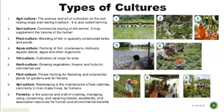Types of culture: Agriculture, Sericulture, Pisciculture, Aquaculture, Viticulture, Horticulture, Floriculture, Apiculture, and Forestry. As we have already discussed, agriculture is the science and art of cultivation on soil; raising crops and rearing livestock — also called farming. Sericulture is the rearing of silkworms.